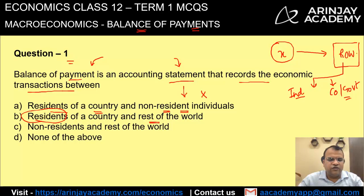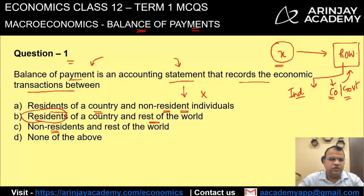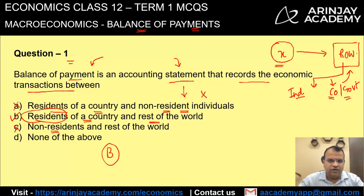Option three — non-residents and rest of the world — is also incorrect, because a country is not interested in transactions that people outside the country are doing with other countries. Why would we prepare a balance of payment for those? The correct option is option B: it is a transaction between the residents of a country and the rest of the world.